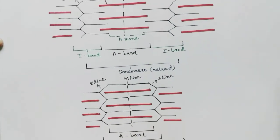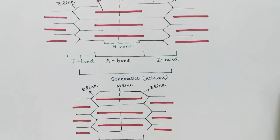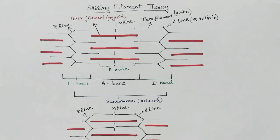You can see the changes of the sarcomere in relaxed and contracted positions. The link to the previous video describing the structure of the filaments is in the description, along with written notes on the molecular basis and description of the sliding filament theory. Thank you.